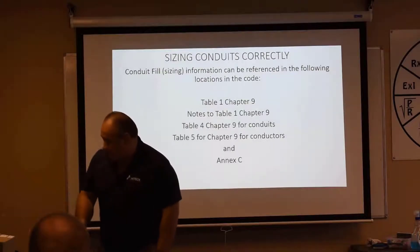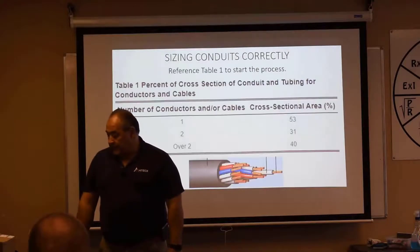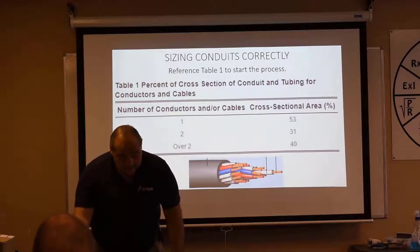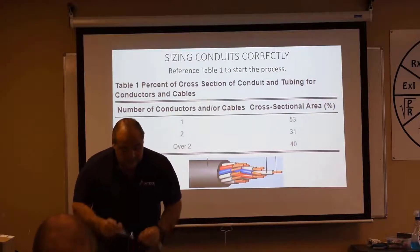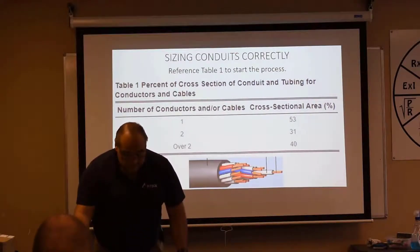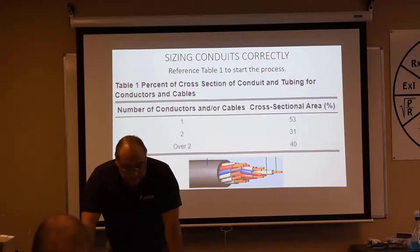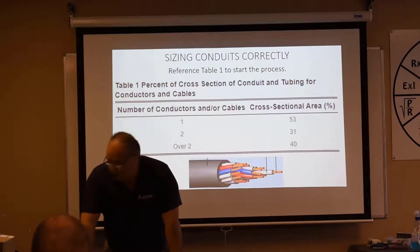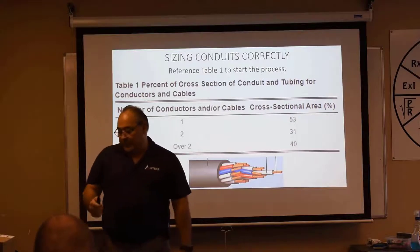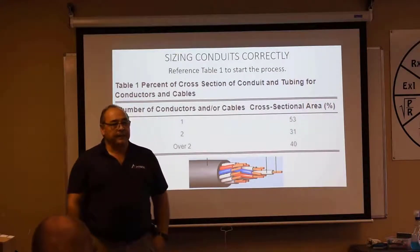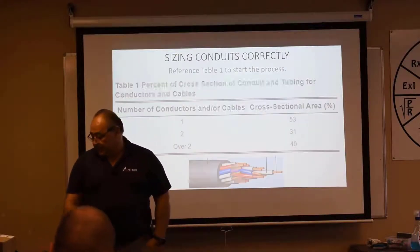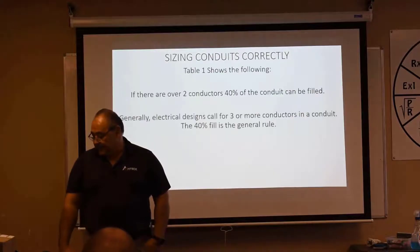Let's look at Table 1, Chapter 9. It shows percent of cross-section of conduit and tubing for conductors and cables. We have number of conductors and/or cables: 1, 2, and over 2. Then we've got cross-section area and percentage: 53, 31, 40. I want you to draw a percentage sign there so you know those are percentages.